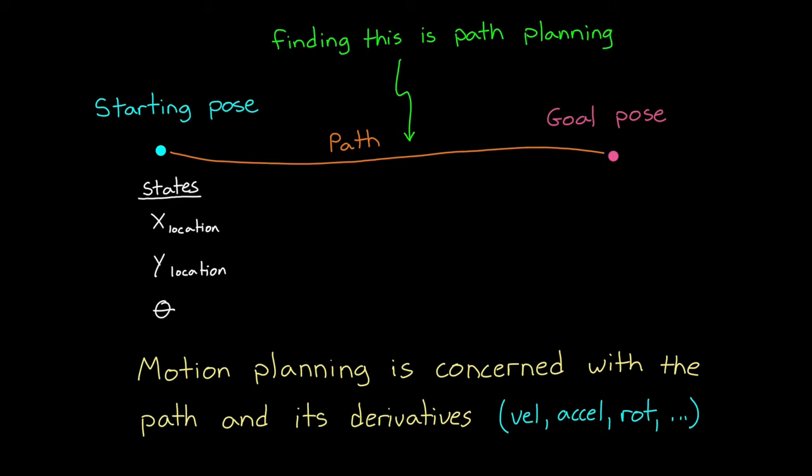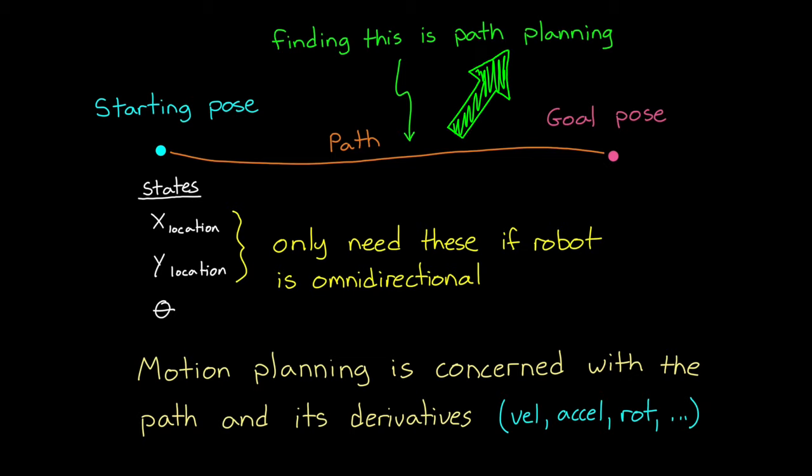The size of the pose vector depends on the specifics of your system and environment. Instead of three states, it could be just two, X and Y, if the robot is omnidirectional and orientation doesn't matter. Or in the case of a robotic arm with multiple actuators, the pose could consist of dozens of states. Now for this video, the examples I'm going to use focus on path planning for a robot that is omnidirectional, so just two pose states. This will simplify the explanation and hopefully you'll be able to see that these techniques can be extrapolated to higher dimensional systems.